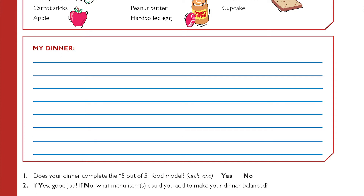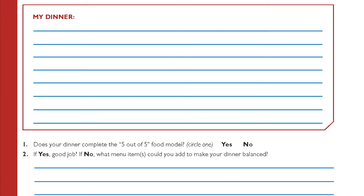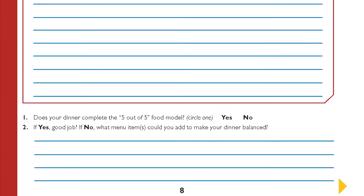Once you've finished, we're going to go ahead and move on to question number one. Does your dinner complete the 5 out of 5 food model? If yes, mark it with an X. If no, mark it with a no.